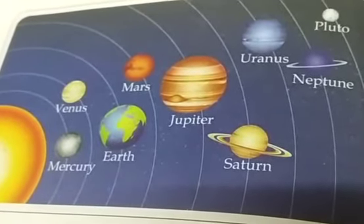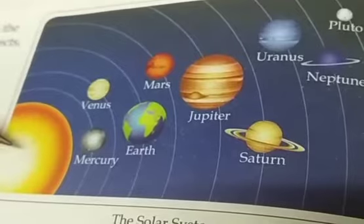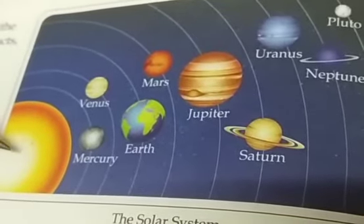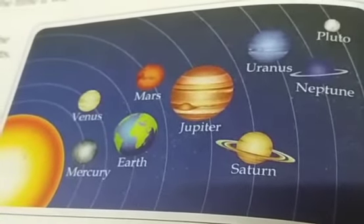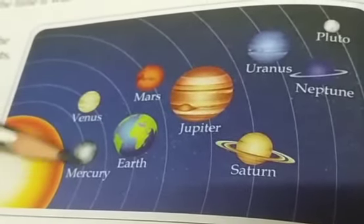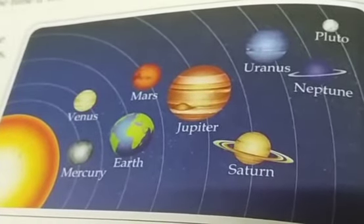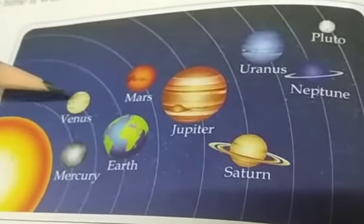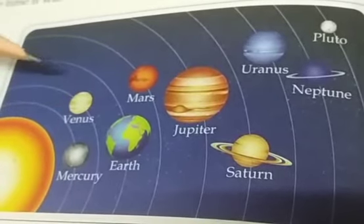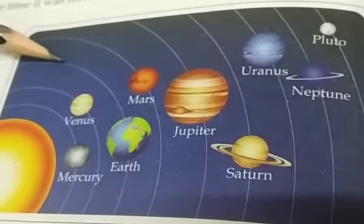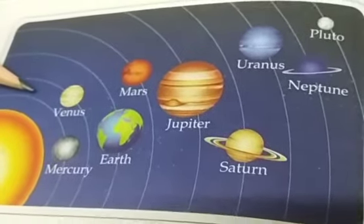Can you see? What is this? This is the sun. The sun is in the middle and all the other planets are revolving around the sun — that means they are moving around the sun. In a fixed orbit. Can you see these lines? These are the lines, or the path.